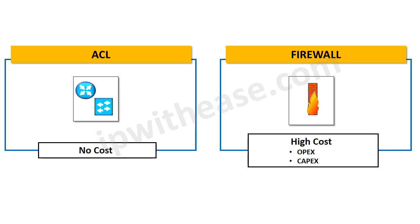Lastly, the ACL feature does not require any additional cost since most of the time it is an inbuilt feature in the layer 3 switch or router. A firewall is generally a dedicated device introduced to provide secure communication flow, and therefore cost is incurred — both OPEX and CAPEX are required for a new firewall and its year-on-year maintenance.